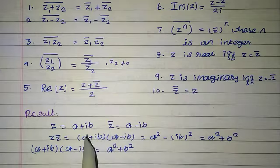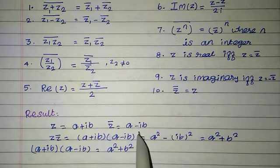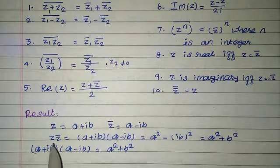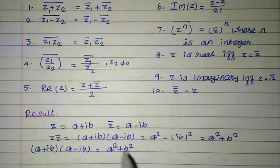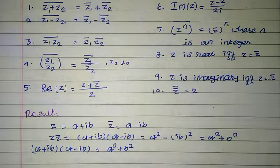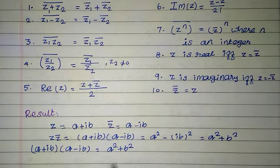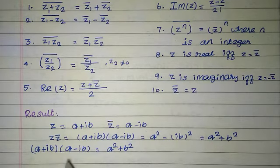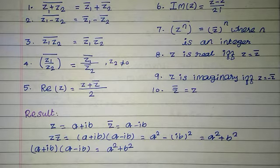Result: if z equals a plus ib, then z bar equals a minus ib. Now, z into z bar equals a plus ib into a minus ib. Using the formula a plus b into a minus b equals a square minus b square, we get a square minus i square times b square. Since i square equals minus 1, this becomes a square plus b square. Therefore, z into z bar equals a square plus b square, that is, the real part squared plus the imaginary part squared.